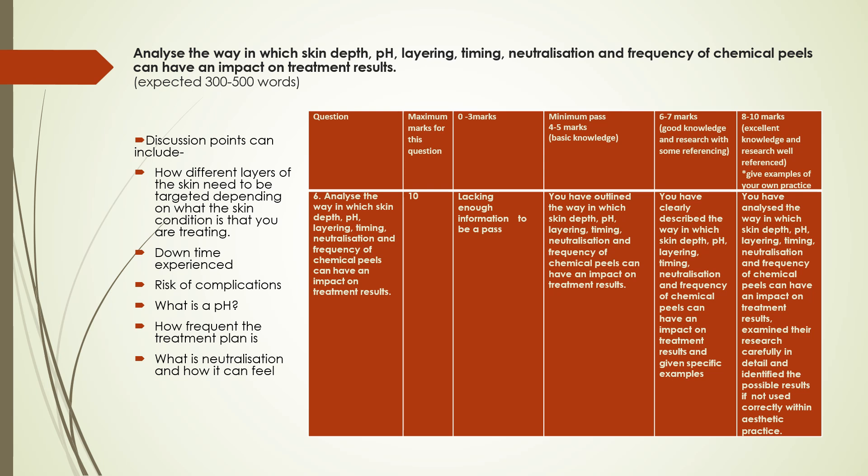Looking at the marking criteria: at a basic level you may have outlined why everything is important without elaborating or giving specific examples. To reach the higher marks, consider what the consequences could be if you don't use peels correctly or don't follow the correct processes — for example, using the wrong peel, failing to neutralize properly, or not listening to the client about their desired downtime or upcoming events.